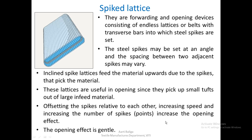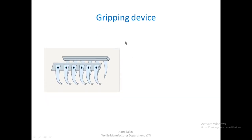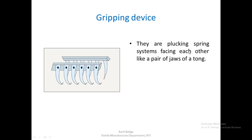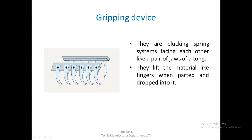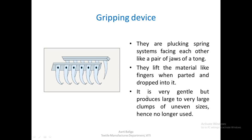The opening effect of spike lattices is very gentle. The second type is the gripping device — plucking spring systems facing each other like a pair of jaws. They lift the material like fingers when parted and dropped into the material, gripping the fibers. However, it is very gentle in action but produces large to very large clumps of uneven sizes. Hence, one may not find this device anymore in the blow room, mainly because of the large and uneven sizes of clumps it produces.